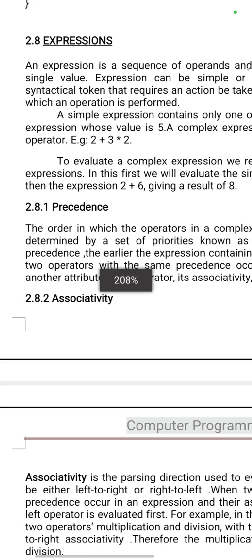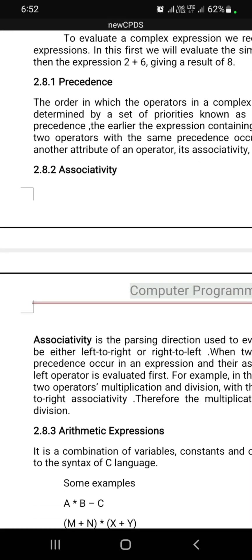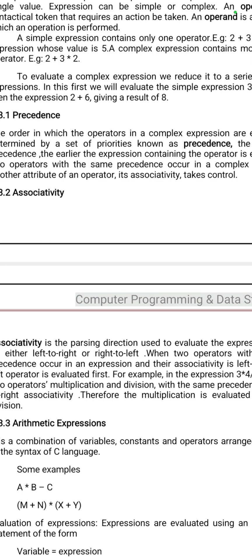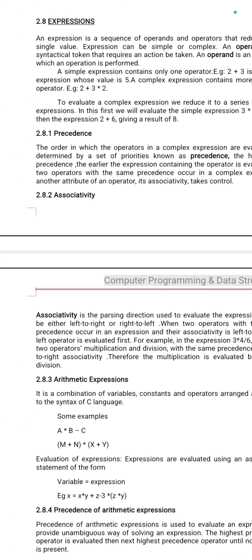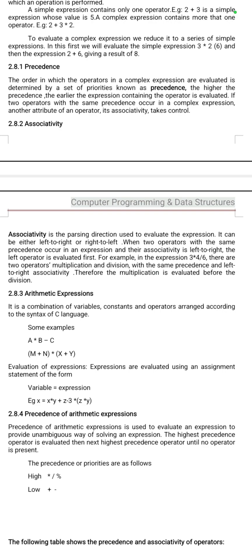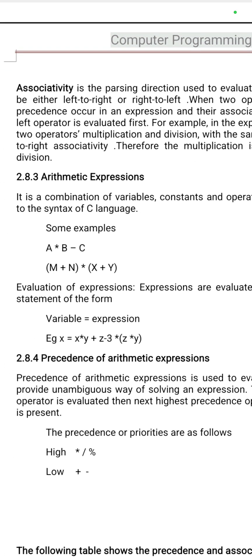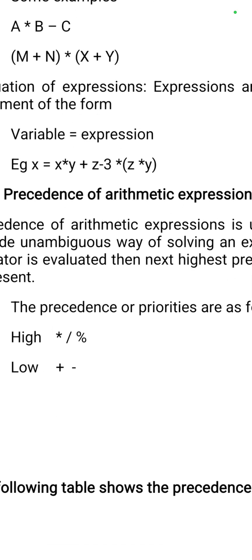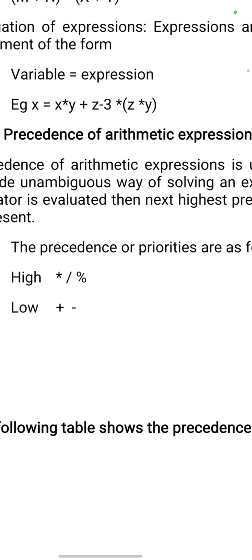Then precedence and associativity. Precedence means if the expression contains operators of the same hierarchy level, which level of operator is executed first is explained by precedence. Associativity means when all operators have the same priority, which one is executed first is explained by associativity. For example, in A into B minus C — multiply and division and modulo are high priority; plus and minus are lower priority.